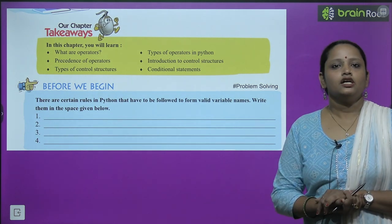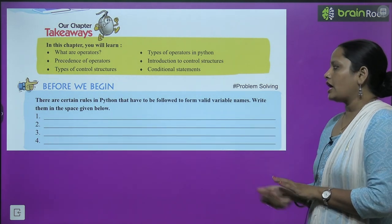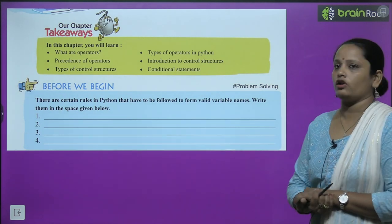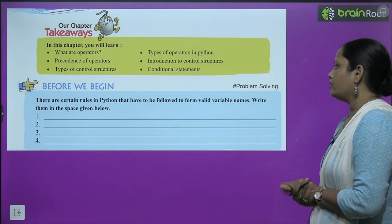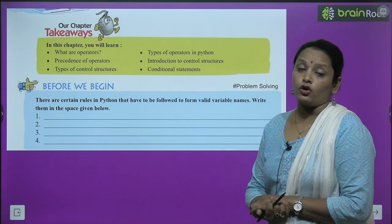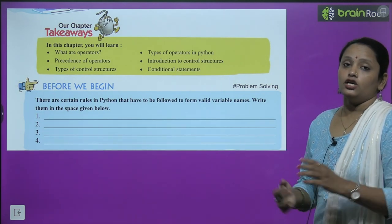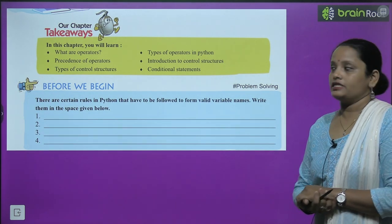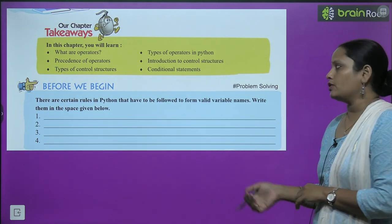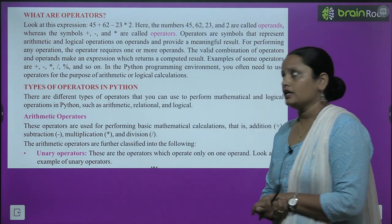Let's start with this activity. What's written here? There are certain rules in Python that have to be followed to form valid variable names. Kuch rules hain Python mein jinhe follow karna bahut zaruri hai taaki jo variable name hai woh valid ban sake. Write them in the space given below.